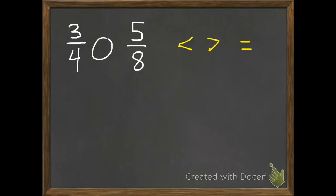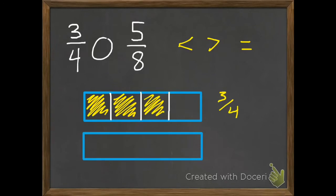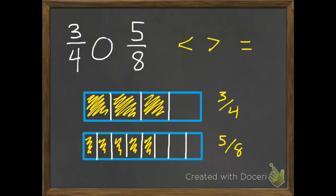So with 3 fourths and 5 eighths, we can still use pictures, but it's going to get trickier, and it's hard to make sure all your pictures are drawn exactly right. So we could draw out 3 fourths and draw out 5 eighths, and if our pictures are drawn perfectly — mine isn't quite perfect by any means — we can tell that 3 fourths is going to be greater than 5 eighths. So I put in my greater than sign.